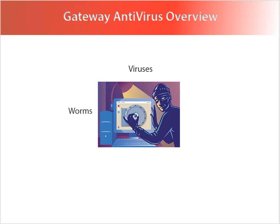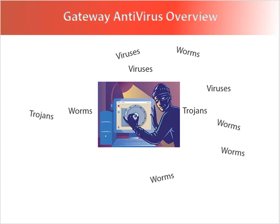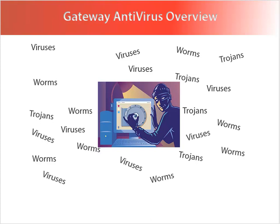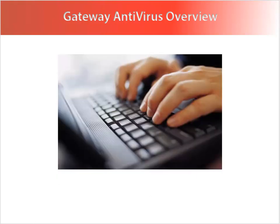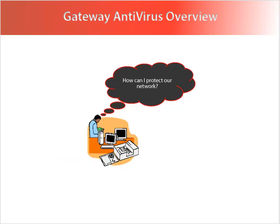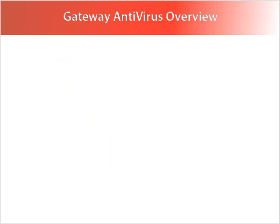Viruses, including worms and trojans, are malicious computer programs that self-replicate and put copies of themselves into executable code or documents. When a computer is infected, the virus can destroy files or record keystrokes. Hackers logging your users' keystrokes is anything but secure. The best way to defend your network from infections and key logging is with prevention.